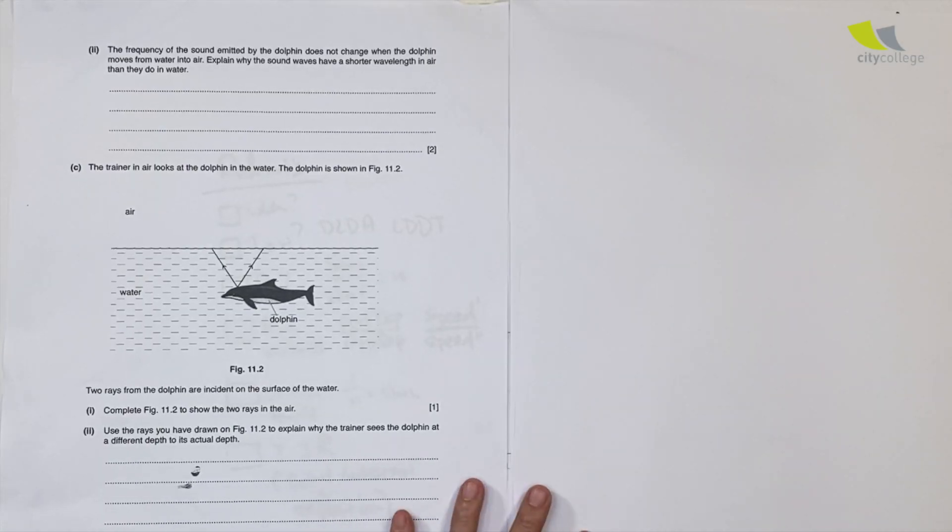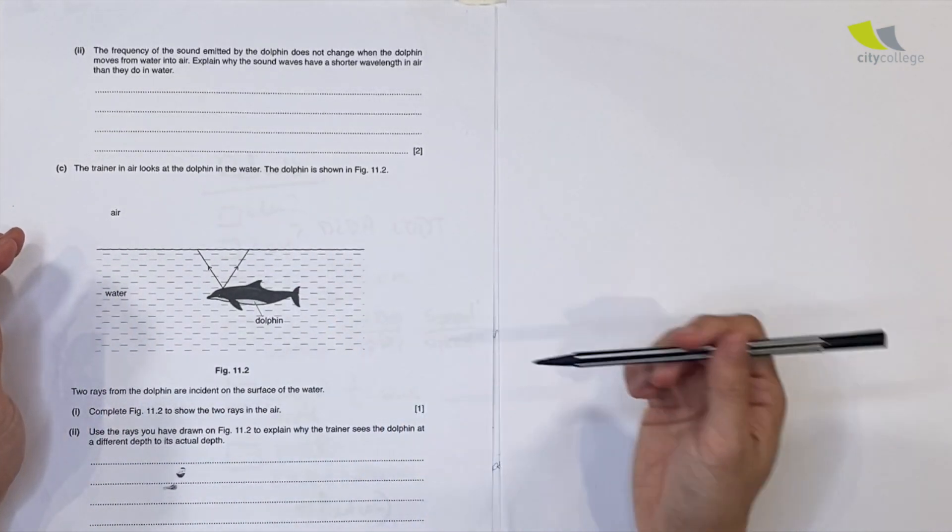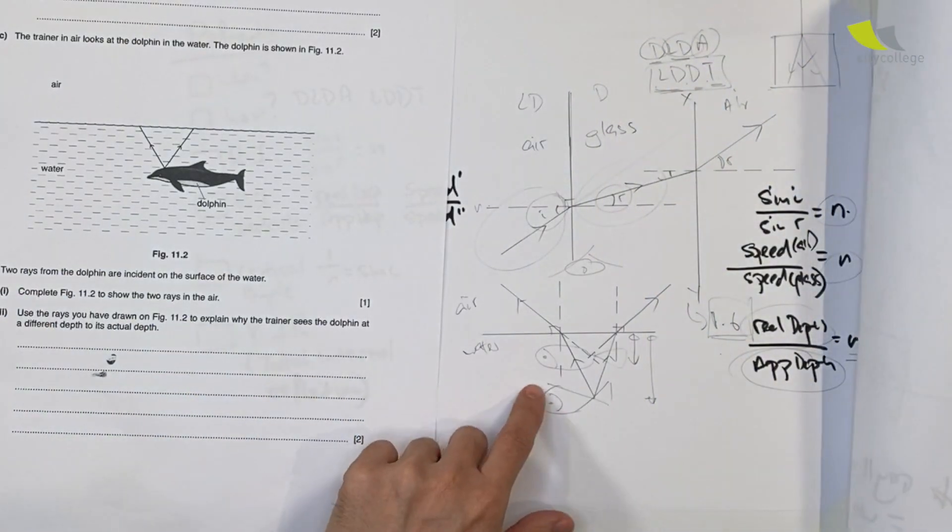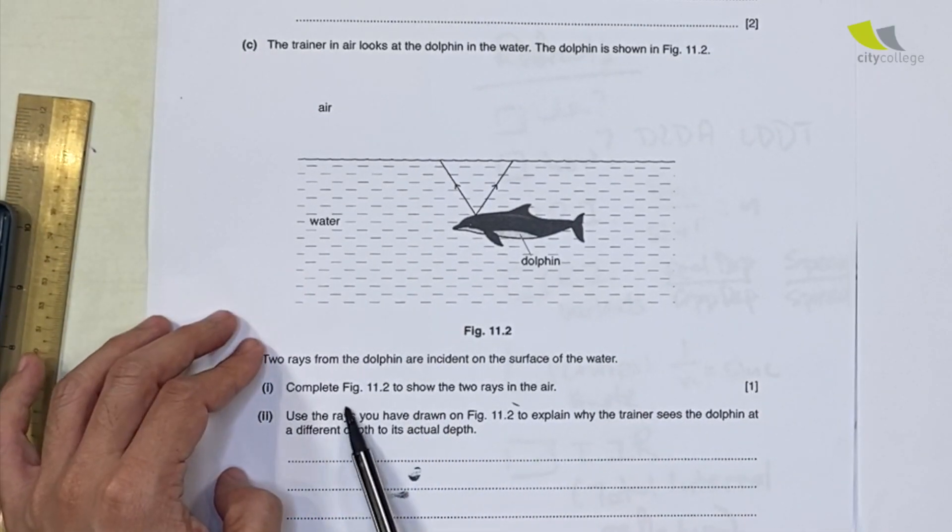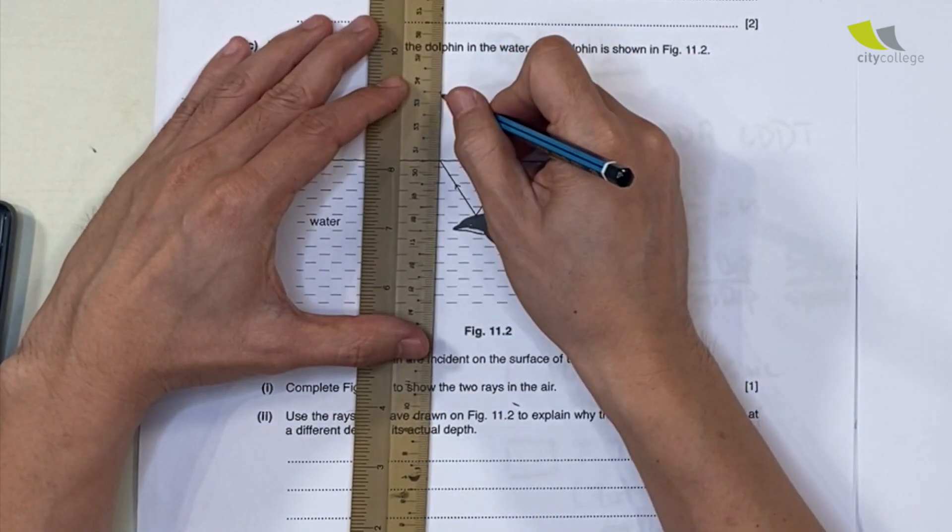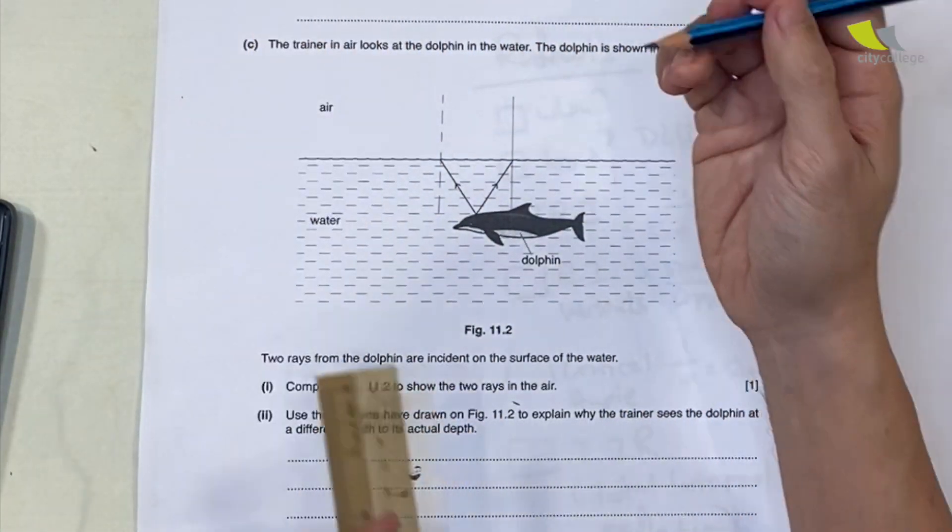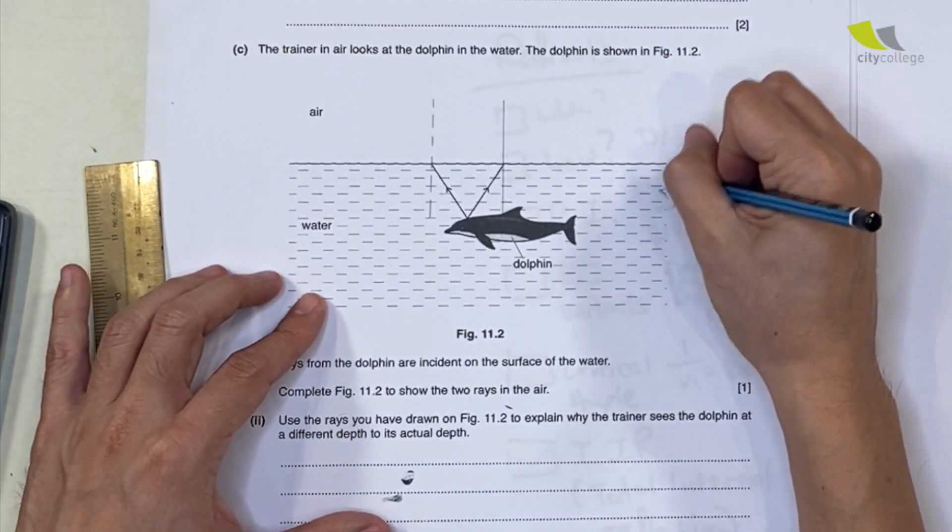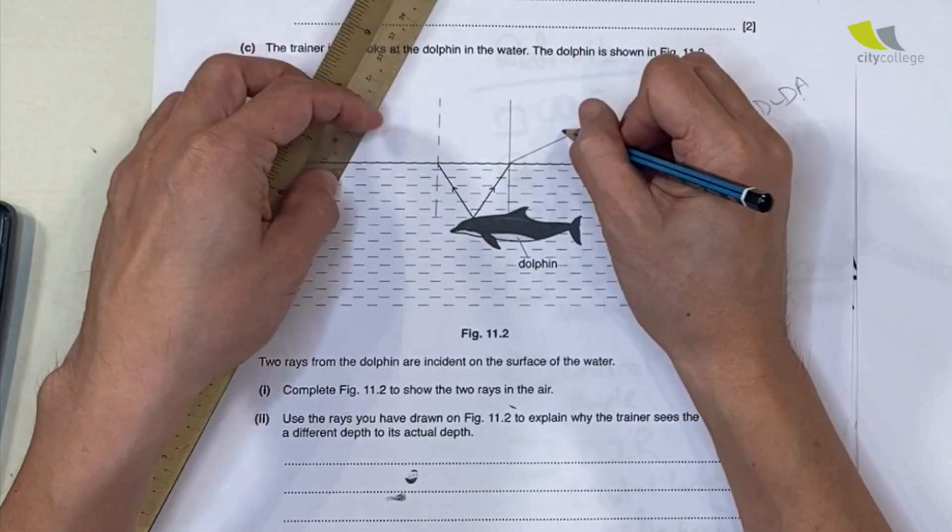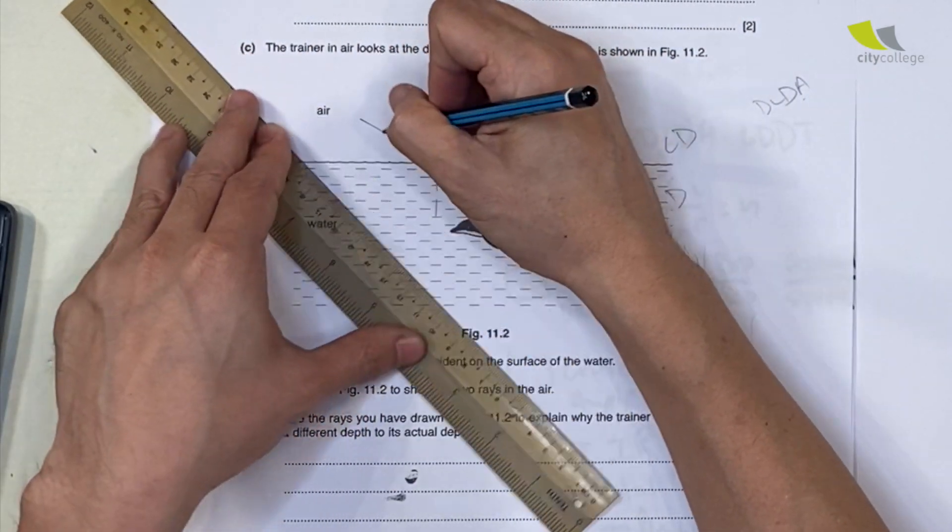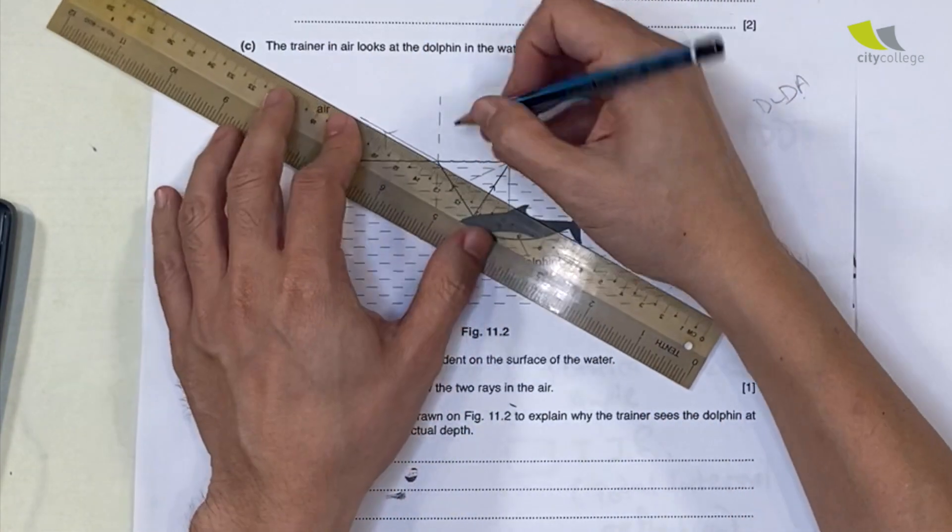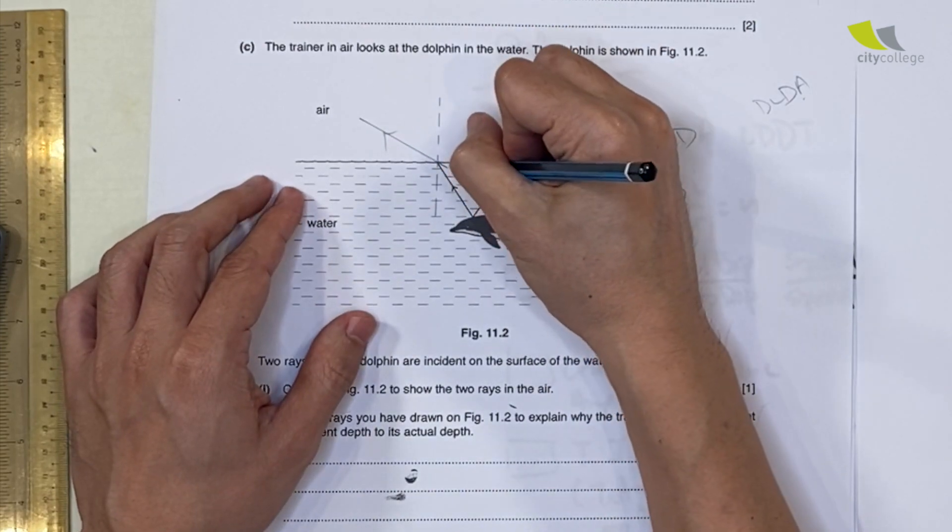Let's look at this question in Section B. It's part of the dolphin question paired with sound. The trainer in air looks at the dolphin in water as shown. This is similar to this example. Two rays from the dolphin are incident - complete the figure to show the two rays in the air. Draw your normal first; this should be dotted line to show it's not real rays. This is dense, this is less dense. You are bent away from the normal like this. Make sure the traced ray is dotted to show it's virtual.